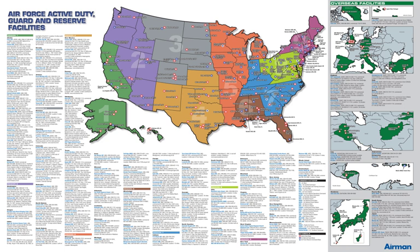PACAF's predecessor was activated at Brisbane, Queensland, Australia. It consisted of three numbered air forces — 5th, 7th, and 13th — which were supporting combat operations in the Pacific Theater of World War II. DoD Joint Bases in Alaska, Hawaii, and Guam are not listed.